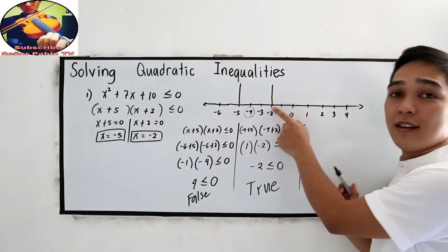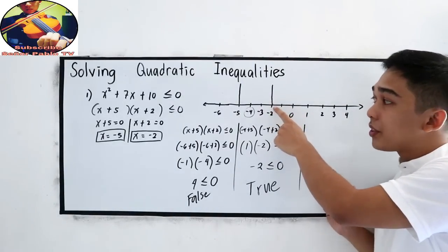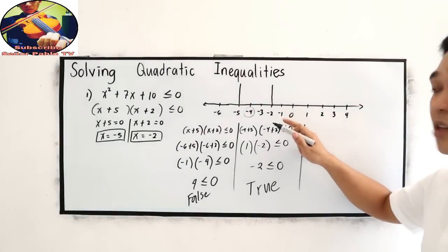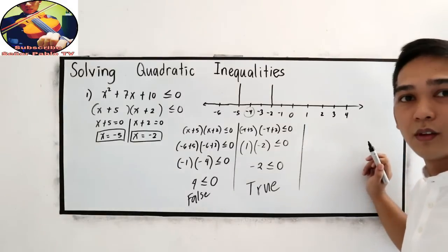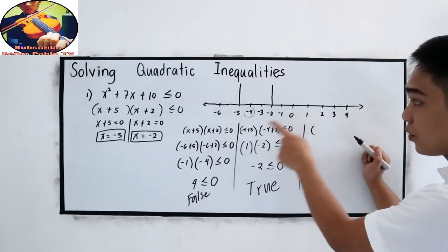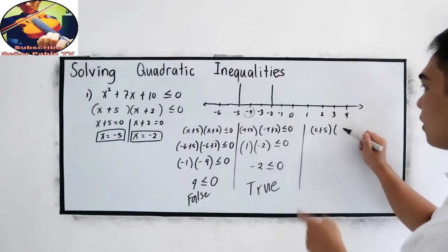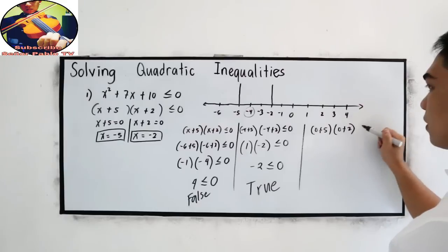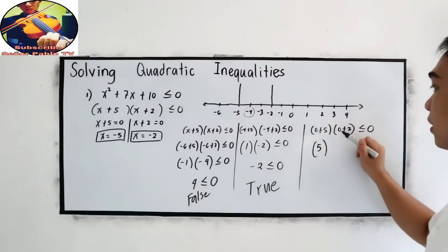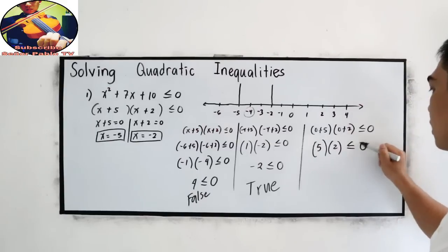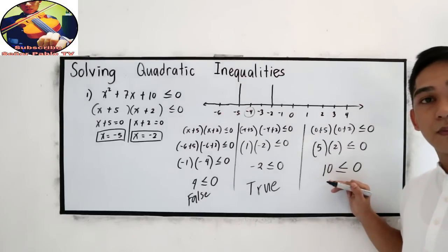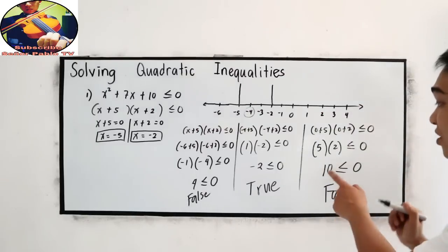Let us check the numbers on the right side of negative 2. I'm going to choose 0 because it is the easiest. Substituting: (0 + 5)(0 + 2) = 5 times 2 = 10, and 10 is not less than or equal to 0. This is false.